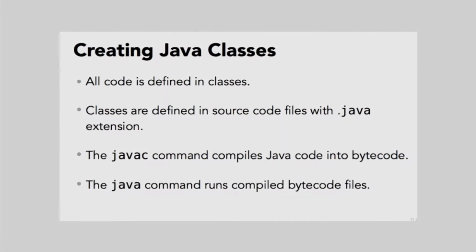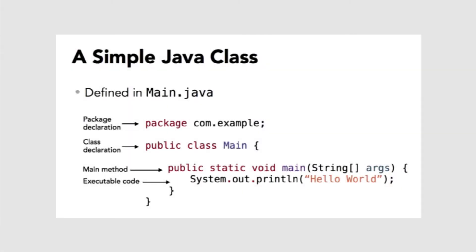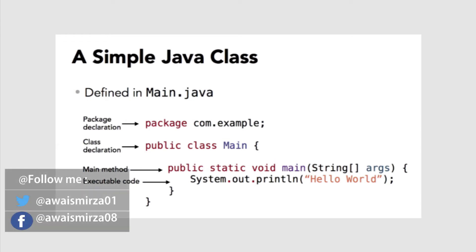Here's the classic Hello World application. The name of the class is Main, so it is defined in a text file named Main.java. The first line is called the package declaration — Java classes are typically organized in packages. A package is a globally unique string that typically starts with a domain name in reverse domain order. So my domain name is awaismirza.com, so I would start my package string with com.awaismirza to ensure a globally unique identifier. Then if there is more than one class named Main in any application, I can distinguish them using the package.